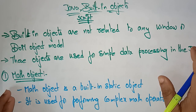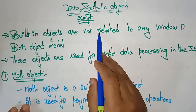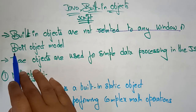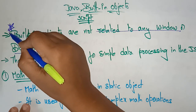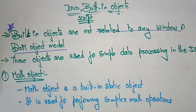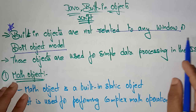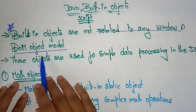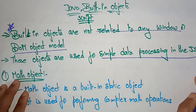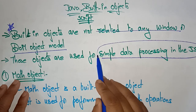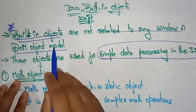In JavaScript, the built-in objects are not related to any window or DOM object model. Remember this — they are not related to any window or DOM object model. These objects are used for simple data processing in JavaScript.